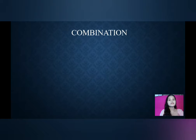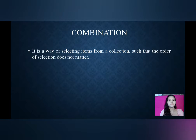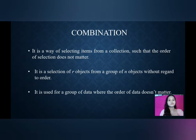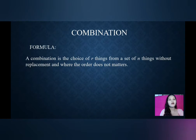Now, let's discuss about combination. It is a way of selecting items from a collection such that the order of selection does not matter. Formula: It is a selection of r objects from a group of n objects without regard to order. A combination is a choice of r things from a set of n things without replacement and where the order does not matter.